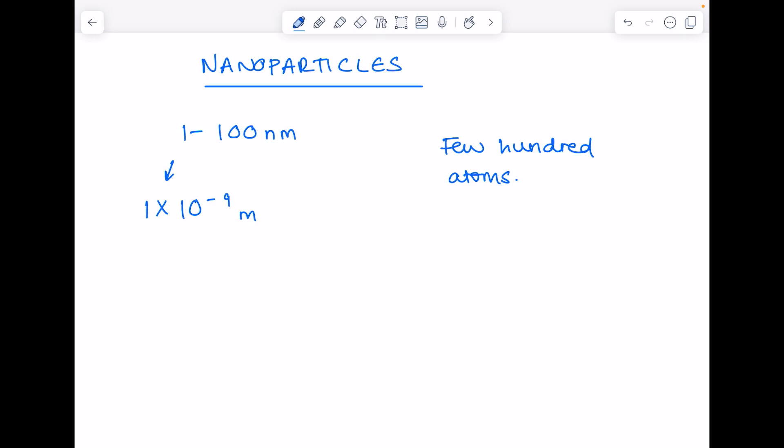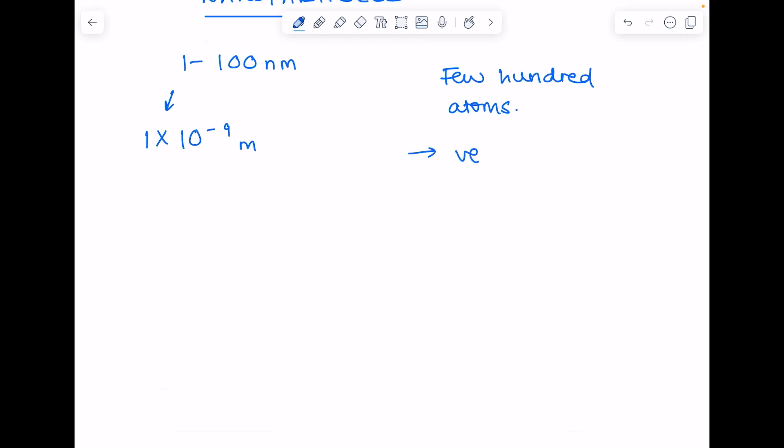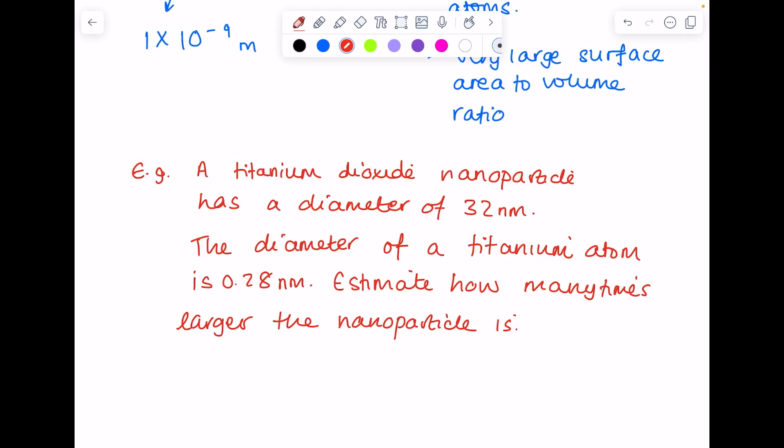Now because they're so tiny, it means that they have a very large surface area to volume ratio. Lots of the properties of nanoparticles depend on their very small size.